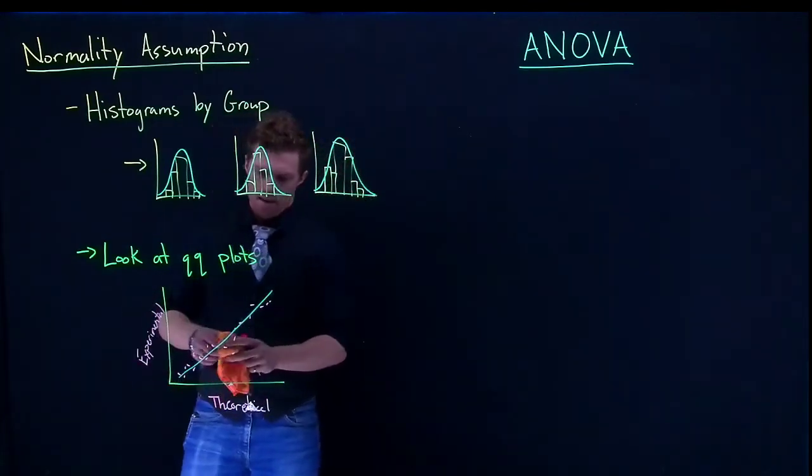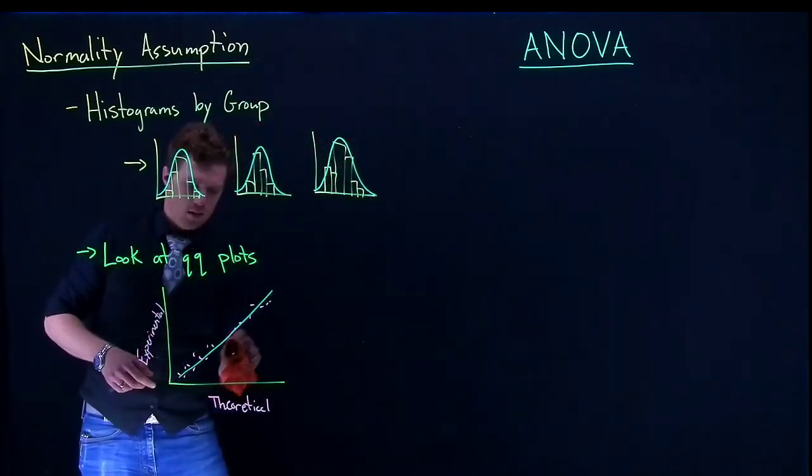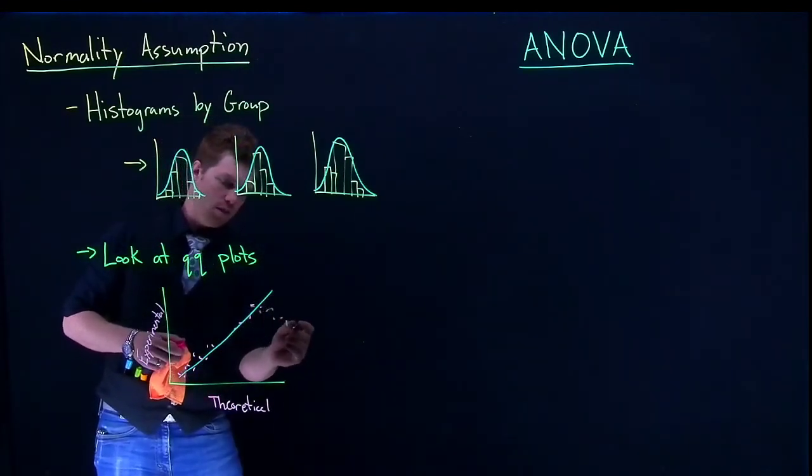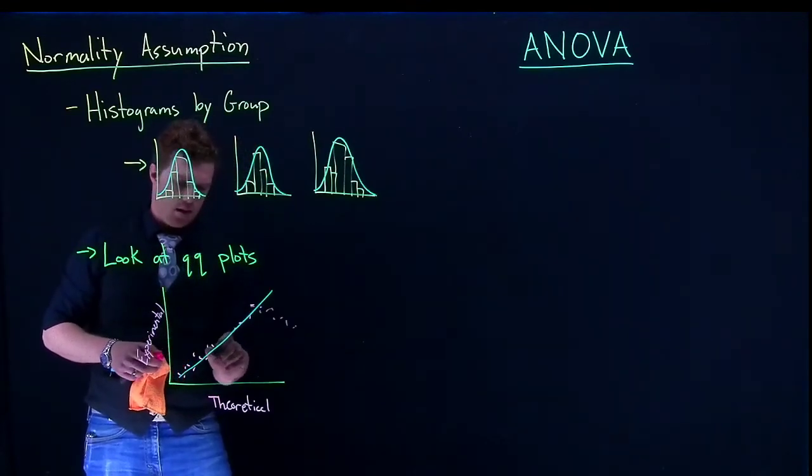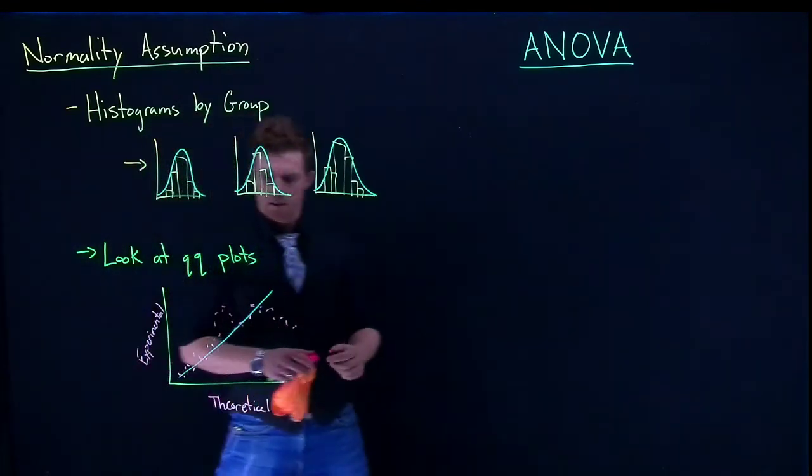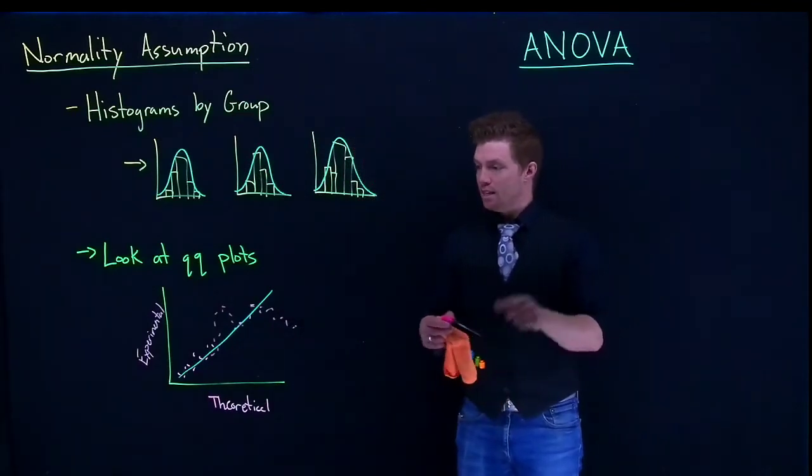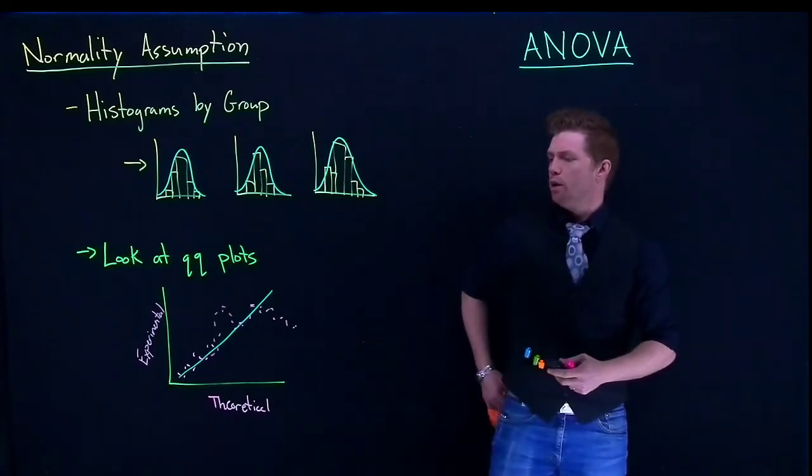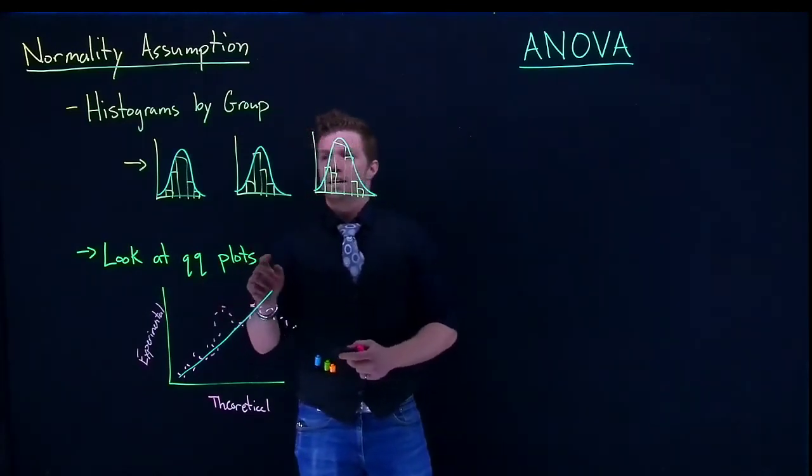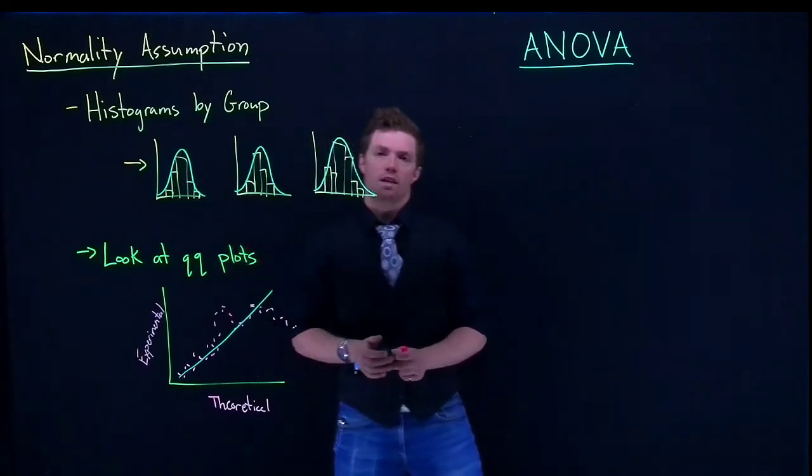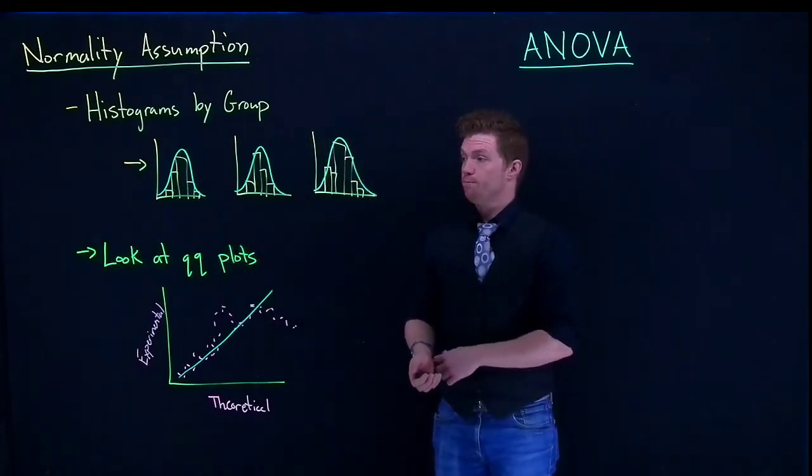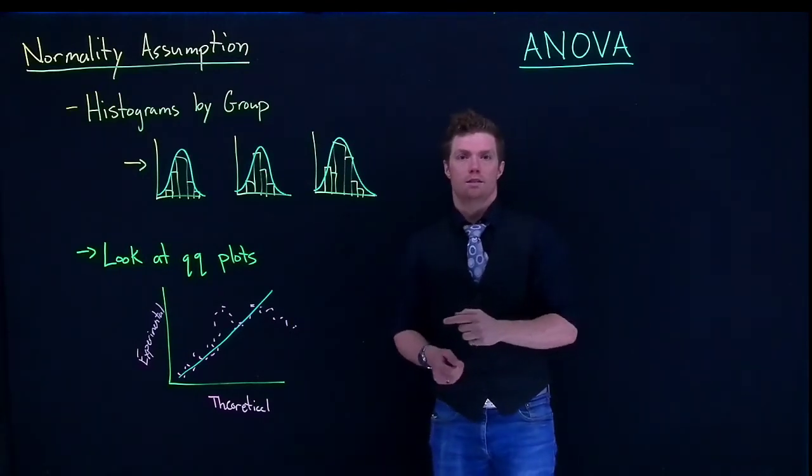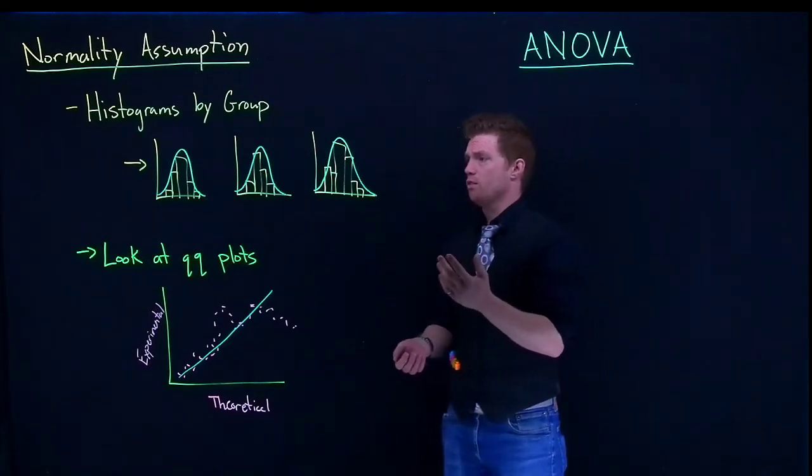But if we were to instead have seen something that has like a super heavy tail or something, like it starts to deviate a lot, and maybe we kind of go up like this, and then back down. That doesn't really follow a linear line. We might want to take a deeper look to see what's actually going on with some of these specific data points, and see if it's from a specific group that really doesn't follow a normal distribution. So we've got histograms by group, and we can look at the QQ plots.